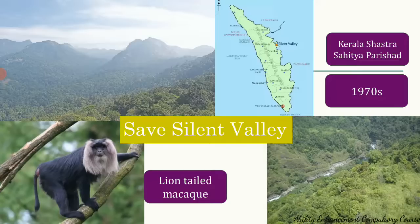This was one such successful movement where the combined involvement of environmentalists, politicians, and the public safeguarded a biodiversity region. In fact, in 2017, when the summer was very dry and all rivers were drying up, the Kunti River did not completely dry. One reason for that is that there was no dam obstructing its flow, making the Save Silent Valley project a boon for the people of Kerala.